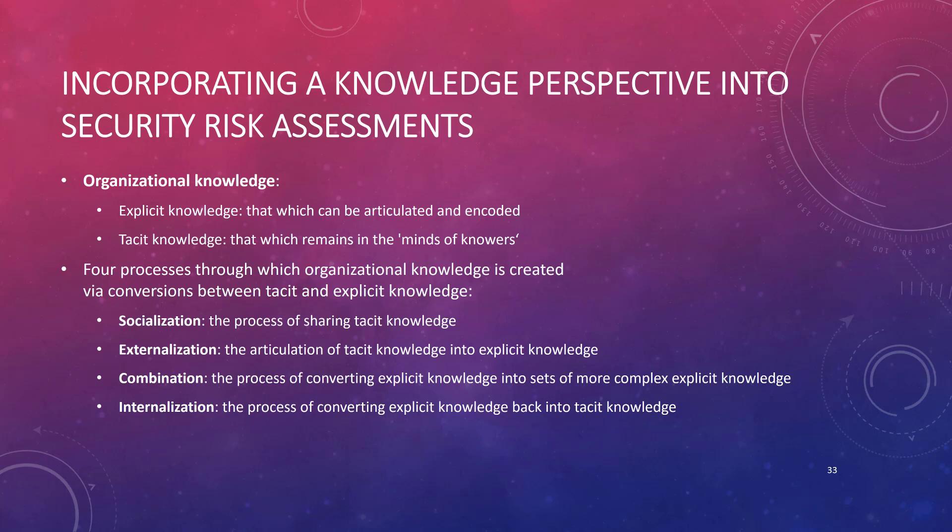Looking at knowledge management or organizational knowledge, there are two different types. One is explicit knowledge, which is encoded in some form and can be articulated. The other is tacit knowledge, which exists in the minds of the knowers but influences how we get things done within a particular organization. Based on that, there are four processes — socialization, externalization, combination, and internalization — to convert explicit knowledge into tacit knowledge, or tacit knowledge into explicit knowledge, or to strengthen explicit knowledge into a more complex form.